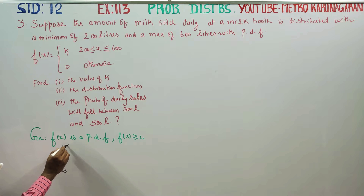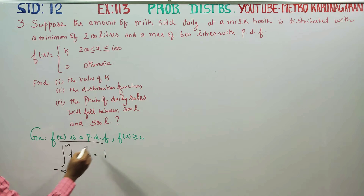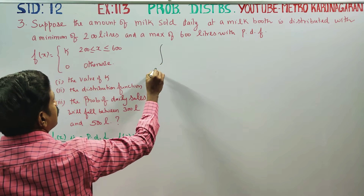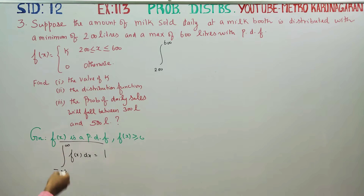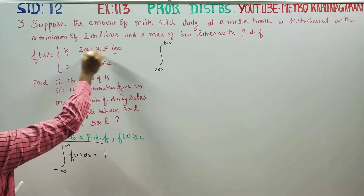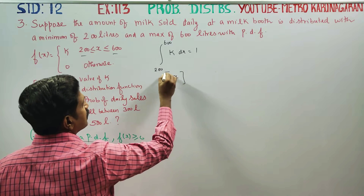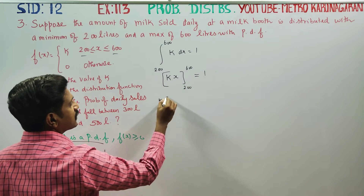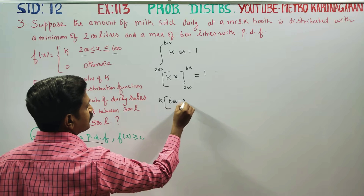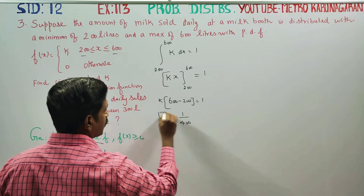Using the formula: integral from minus infinity to plus infinity of f(x) dx equals 1. The interval is from 200 to 600, otherwise 0. So integration from 200 to 600 of k dx equals 1. Therefore k times (600 minus 200) equals 1, giving k equals 1 by 400.